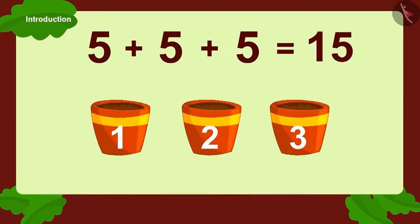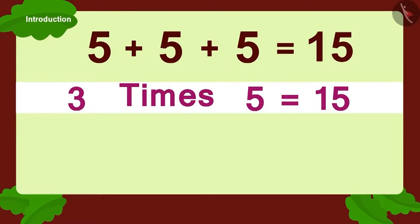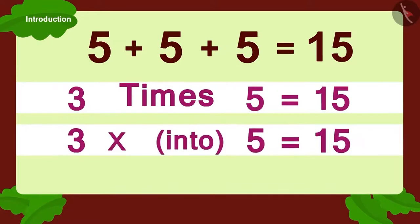Now, how can we write it in a different form? Three times five. Or three multiplied with five.